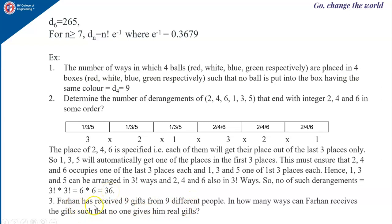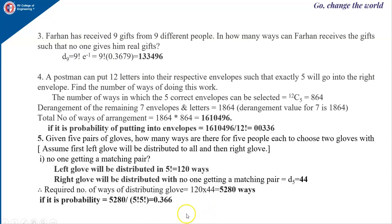Next question: Farhan has received nine gifts from nine different people. In how many ways can Farhan receive the gifts such that no one gives him the real gift? Again it is the derangement of nine objects. Since n is greater than or equal to 7, we use the formula n factorial times e^(−1), which comes to be around 133496.